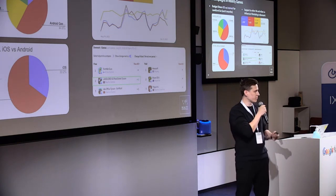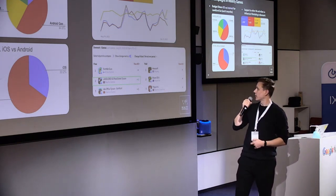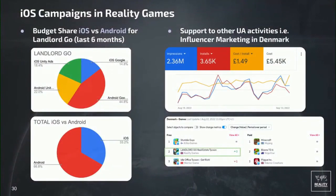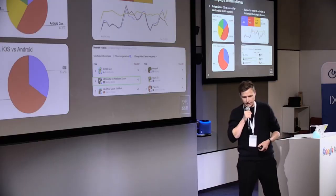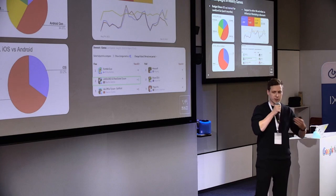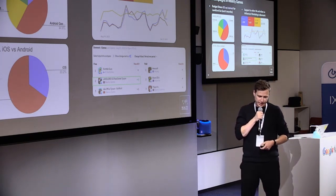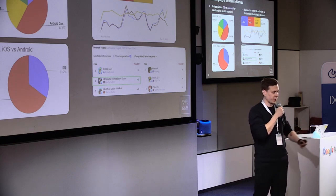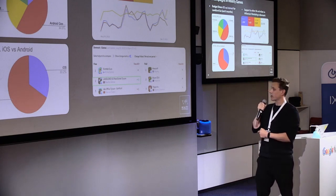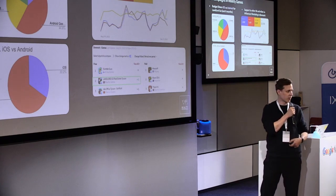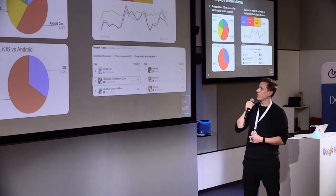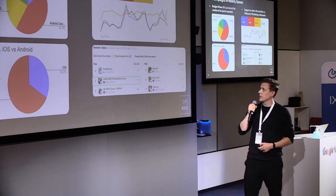Another reason we use iOS campaigns is to support other UA actions. For example, here we have an influencer marketing campaign in Denmark where one of the goals was to reach the top 10 in the games category. As you can see, we reached top 3 in Denmark. The reason this is important is because we wanted to get more organic traffic — everyone loves organic traffic. To sustain that top position in Denmark longer, we launched an iOS campaign in Denmark alongside it.